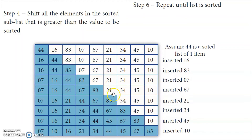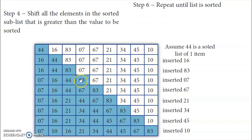The next element is 21. We start comparing from the first position in the sorted sublist. 7 — 21 is bigger. 16 — bigger. Then 44 — 21 is smaller than 44. So 21 has to be inserted before 44. The remaining elements shift: 44 shifts, 67 goes to the next place, and 83 goes to the next place. So the first six elements are now sorted.